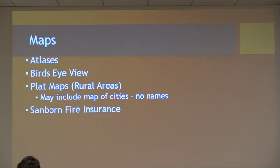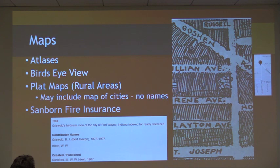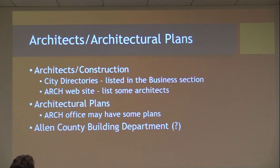You have maps — there's atlases, bird's eye view, plat maps for the rural. They may include maps of cities with names of the owners, plus fire insurance maps. Here's a copy of the 1907 bird's eye view. As you notice, there's two little houses between Lillian and Irene. One of those is that house on Sherman Boulevard that I showed you — one of those two houses is 2603 Sherman Boulevard. So you can even find your house, depending on how old the house is, on a bird's eye view map. That was done by Burke as well.